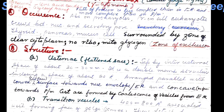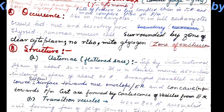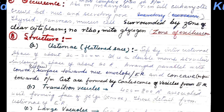As far as structure is concerned, Golgi occurs in flattened sac-like cisternae separated by inter-cisternal spaces of around 20 to 30 nanometers. Cisternae are double membrane structures enclosing a space of about 200 angstroms, arranged parallel. The convex surface faces toward the nuclear envelope or endoplasmic reticulum and is called the cis surface or forming face, whereas the concave surface, termed the M face, faces toward the plasma membrane. Cisternae are created by coalescence of vesicles originating from endoplasmic reticulum.